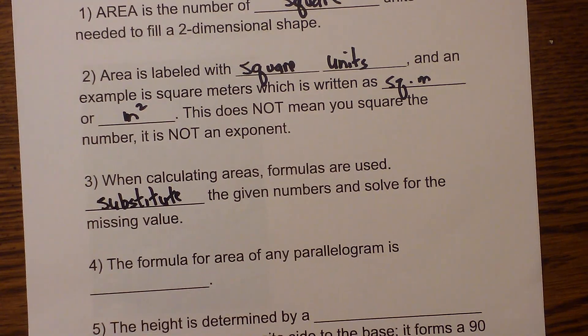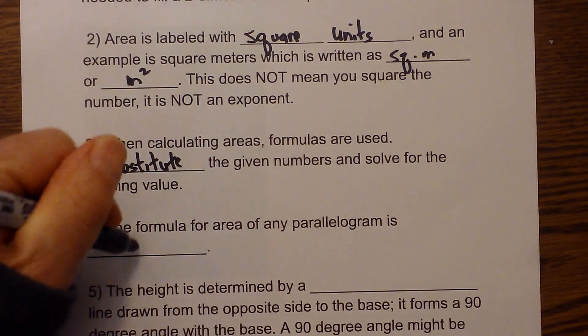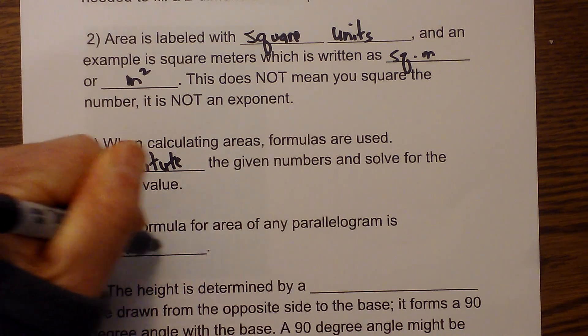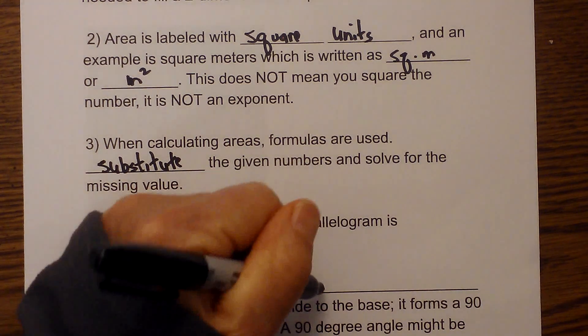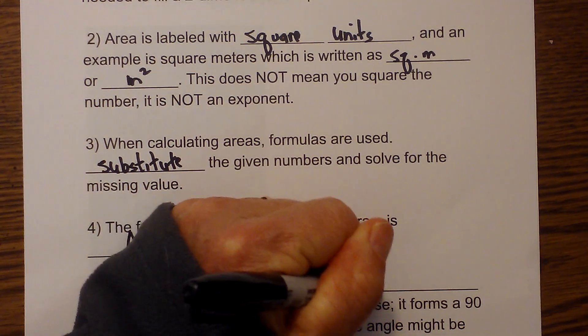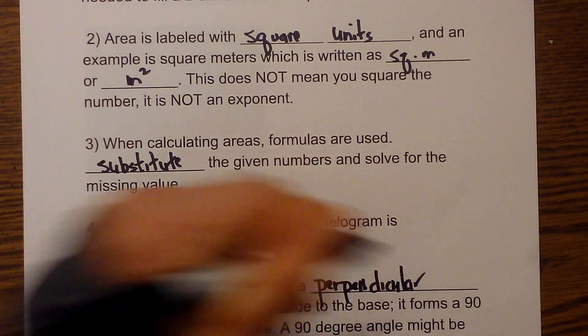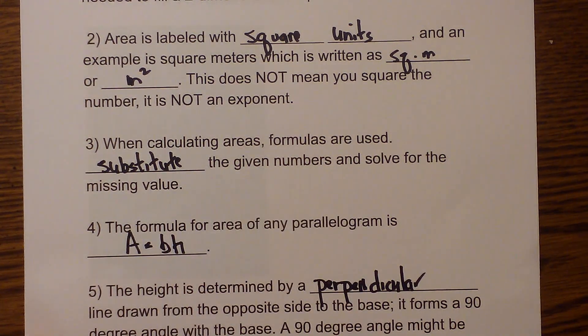The formula for area of a parallelogram is area equals base times height. The height is determined by a perpendicular line drawn from the opposite side to the base. It forms a 90 degree angle with the base.